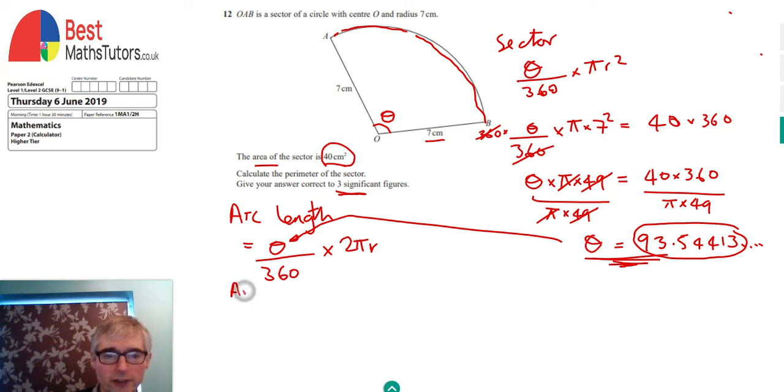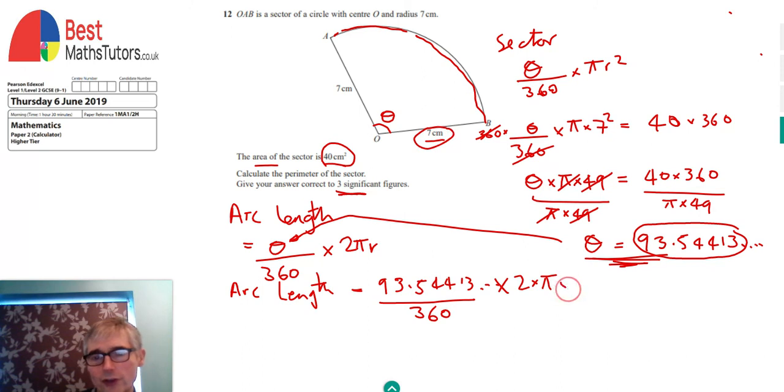The arc length is equal to 93.54413 etc. over 360, and that's all times by 2 pi times the radius which is 7 centimeters. We can work that out and we get 11.42857 with a lot more figures there. Again don't round it up, make sure you use the answer button for further calculations.